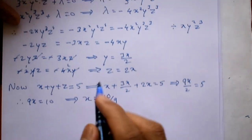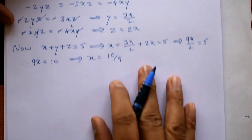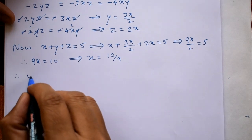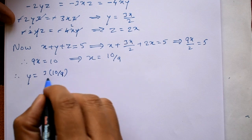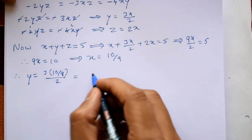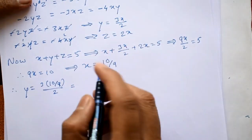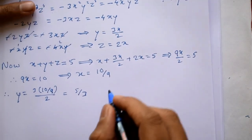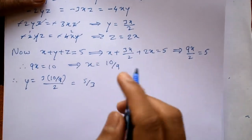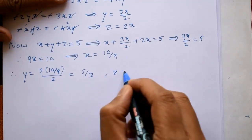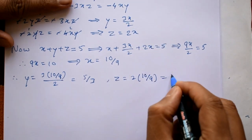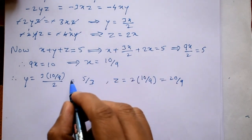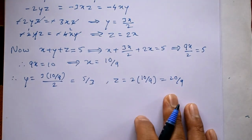Using x = 10/9 in the expressions for y and z: y equals 3x/2 = 3 times (10/9) divided by 2 = 5/3. Next, z equals 2x = 2 times (10/9) = 20/9. We now have all three values: x = 10/9, y = 5/3, z = 20/9.